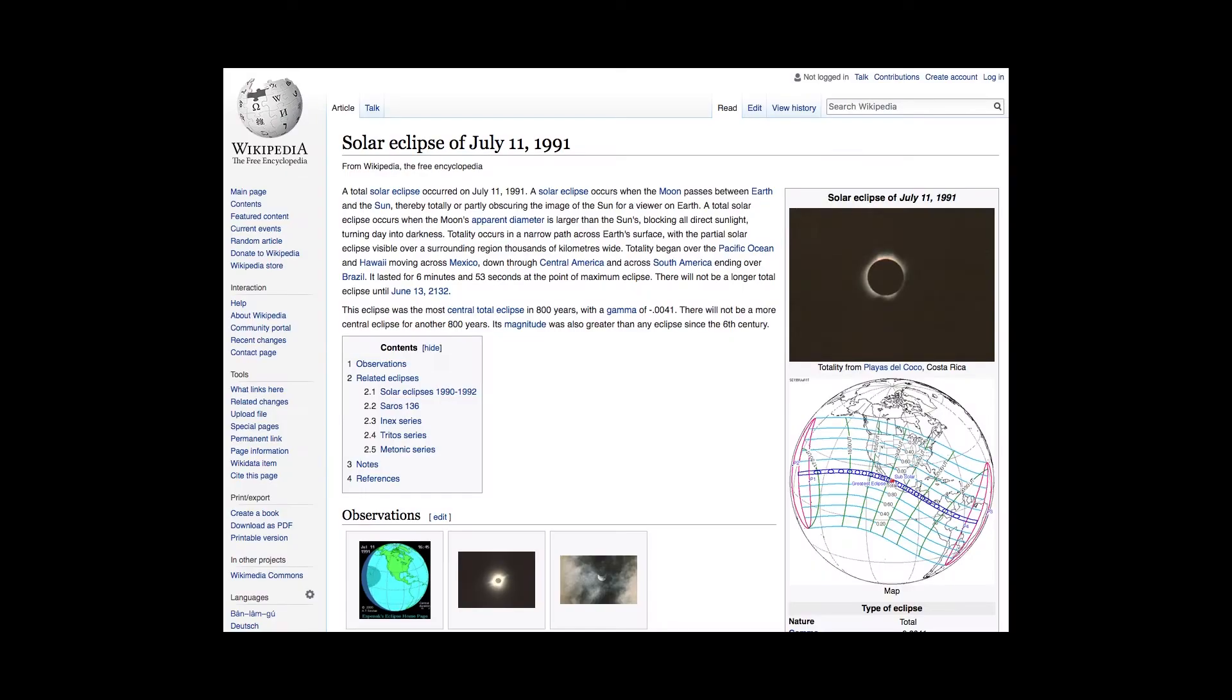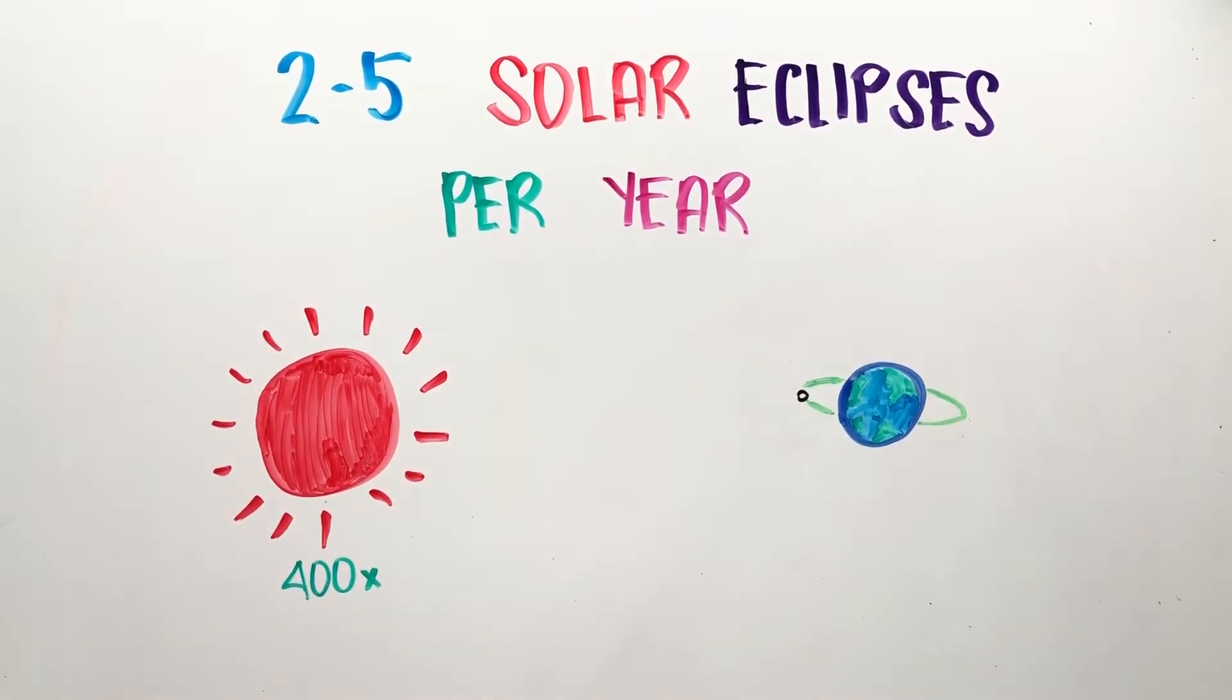The longest total solar eclipse ever recorded was on July 11, 1991, lasting 6 minutes and 53 seconds. The Sun is 400 times the diameter of the Moon and is also 400 times further away from the Earth. So when our Moon passes in front of our Sun, given the right circumstances, it can completely obscure it, turning day into night.